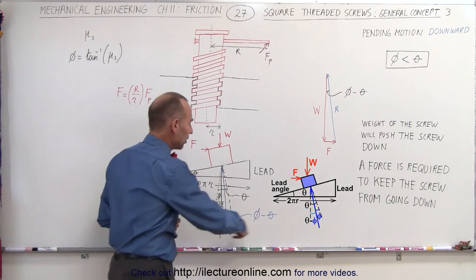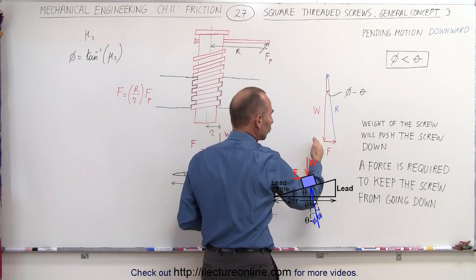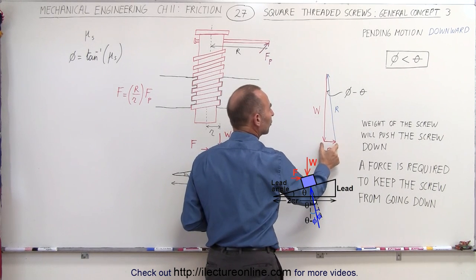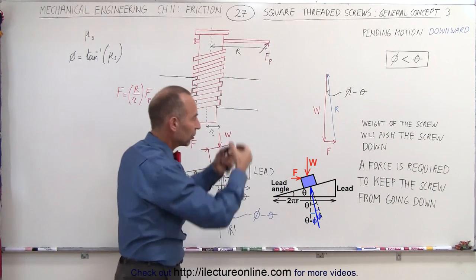So what happens then is we draw a diagram of the sum of all the forces. Here we have the weight of the screw. Here we have the reactionary force, and then this is the force required to counteract the weight of the screw going down, making the screw go down.